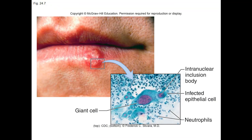Moving to viral diseases of the upper digestive system: keep in mind that the mouth has symptoms of other viral infections that usually produce more dramatic symptoms elsewhere. Measles has Koplik spots. Mononucleosis has oral ulcers and bleeding gums. Thrush — a yeast-based fungal infection — Candida albicans infection can occur in the mouth and throat.